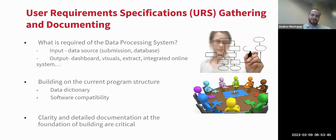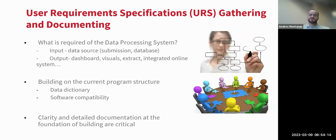You also need to incorporate your current program structure — using the correct terms and structures. If hospital files label male and female as M and F, your requirement document should match. If you have abbreviations in your source documents, include those abbreviations in the specifications document so that the person building the system is fully aware of all organizational terminology.